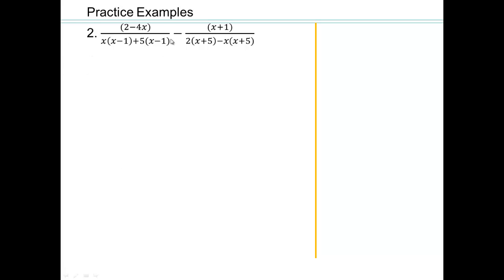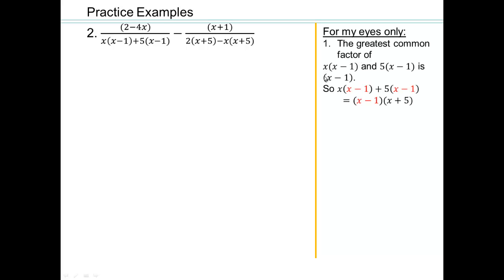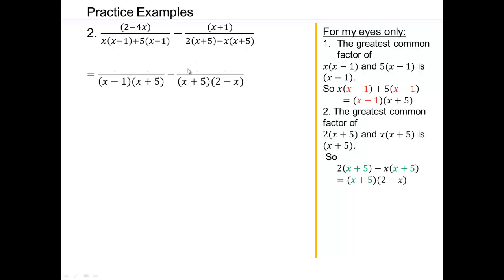It's not written in the factored form, so you have to do the work here. So find the greatest common factor of x times x minus 1, and 5 times x minus 1, so that would be x minus 1. So we can rewrite this as x minus 1 times x plus 5. What about this? We can write that as x plus 5 times 2 minus x, because x plus 5 is the greatest common factor we can pull out. Now that we have the factored form of both the denominators, let's rewrite it.